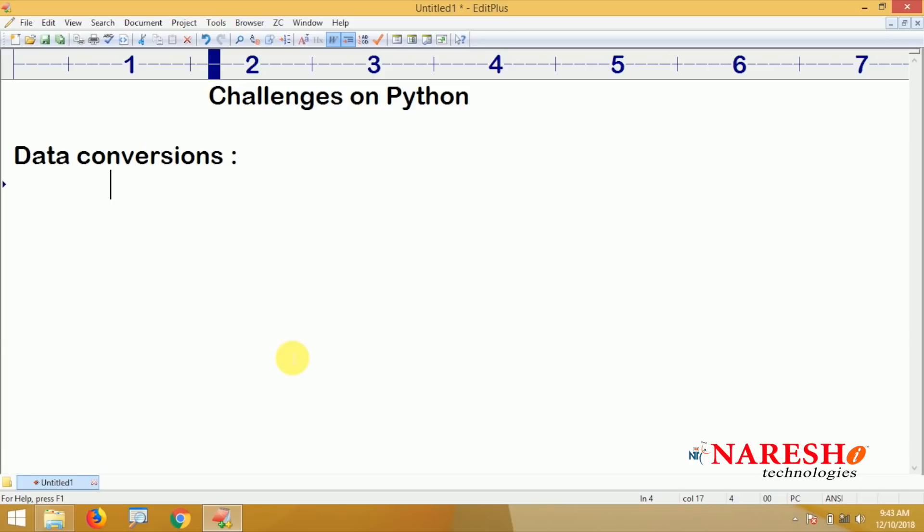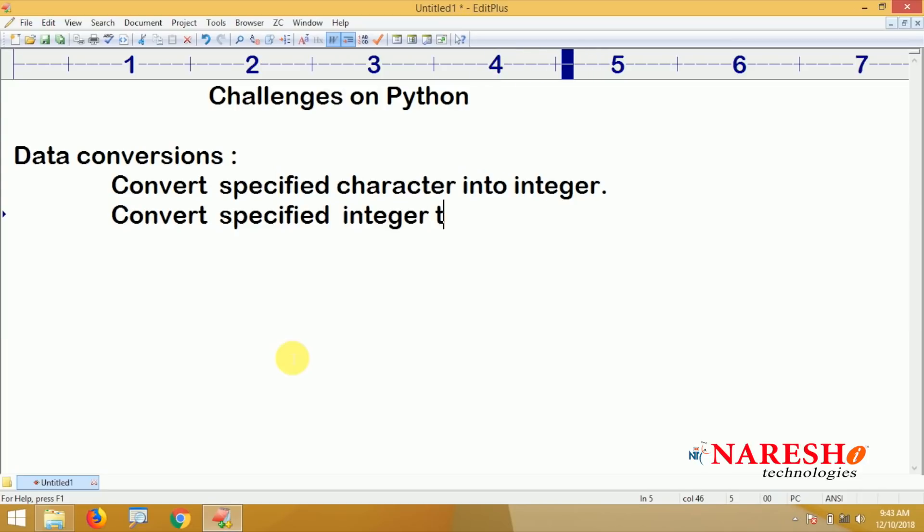The first conversion is to convert a specified character into integer. The second one is to convert a specified integer into character.